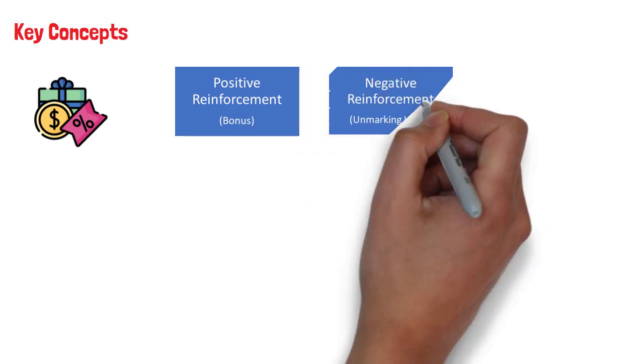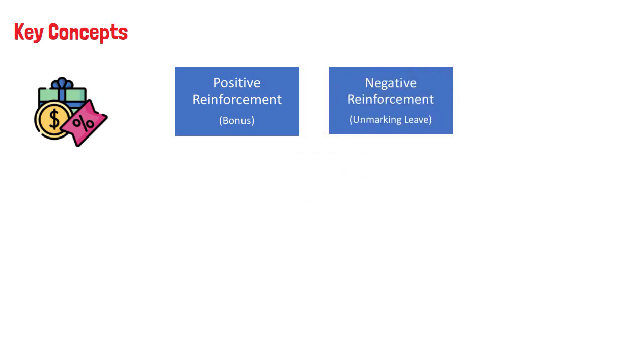2. Negative reinforcers involve the removal of an unfavorable events or outcomes after the display of a behavior. If you do a good job at work and your manager unmarks one of your unpaid leave, that unmarking is a negative reinforcer.